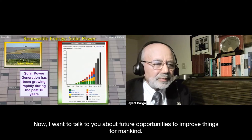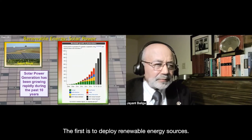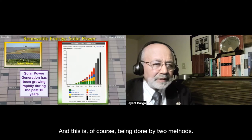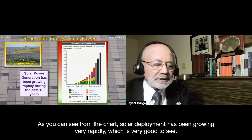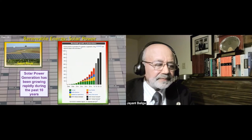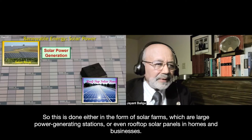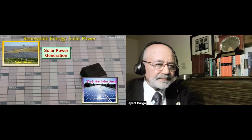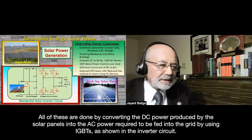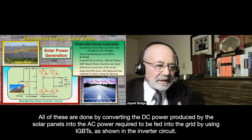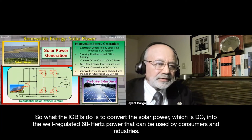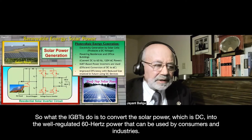Now I want to talk about future opportunities. The first is deploying renewable energy sources. Solar deployment has been growing very rapidly, which is very good to see. This is done either in the form of solar farms — large power generating stations — or rooftop solar panels in homes and businesses. All of these are done by converting DC power produced by solar panels into AC power for the grid using IGBTs in an inverter circuit, converting solar DC into well-regulated 60 Hz power for consumers and industry.